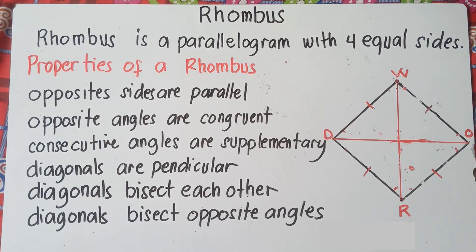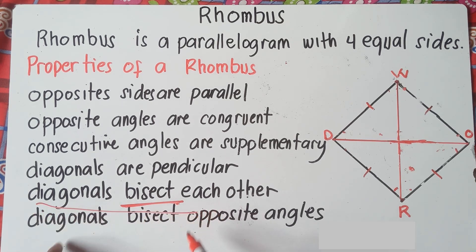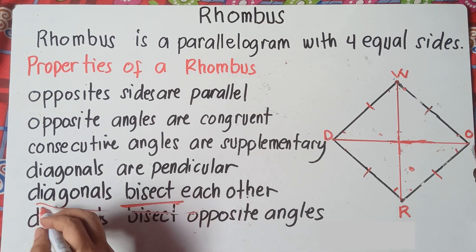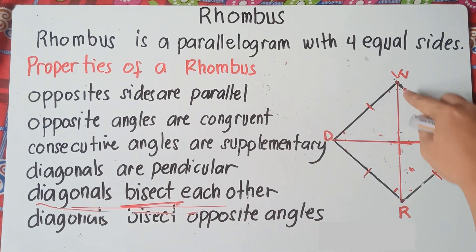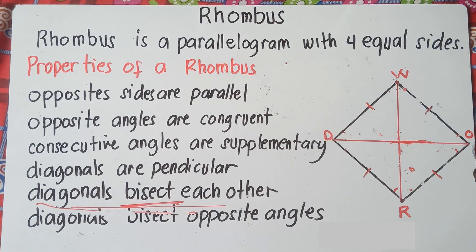The fifth property: diagonals bisect each other. The word bisect means to cut a line or angle into two equal parts. So diagonal WR and diagonal DO bisect each other — meaning DO cuts WR into two equal parts, and WR cuts DO into two equal parts.